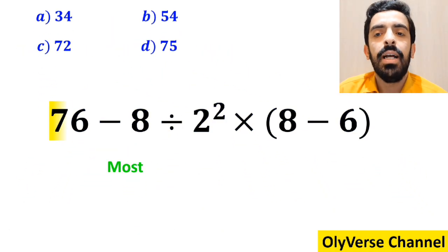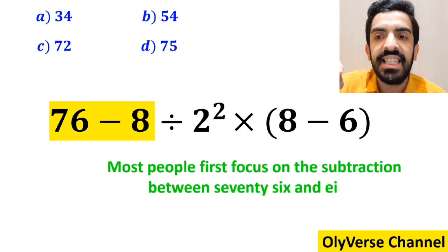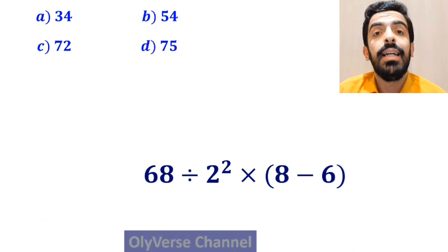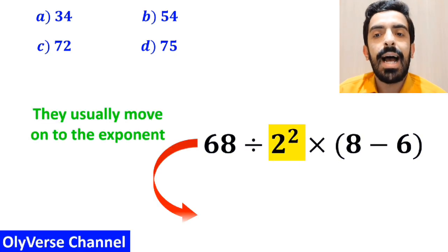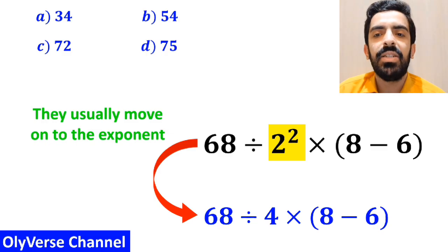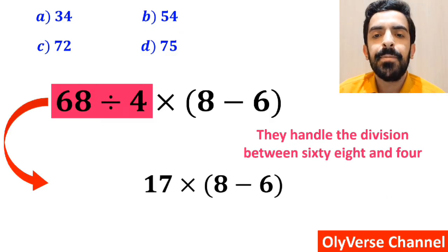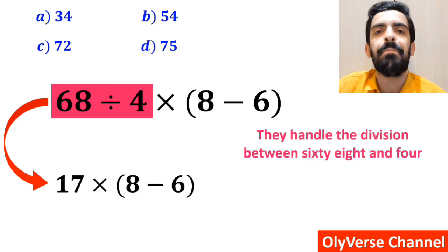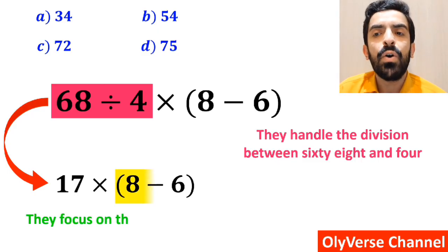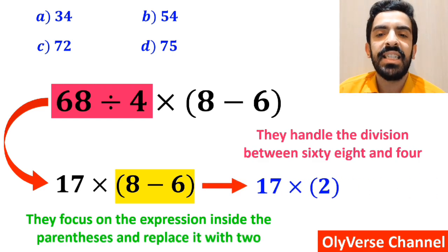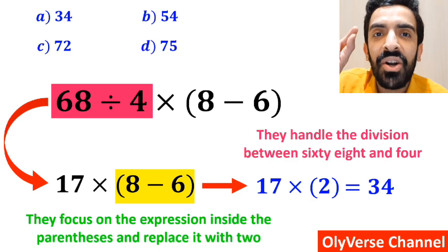To solve this question, most people first focus on the subtraction between 76 and 8 and rewrite the whole expression as 68 divided by 2 to the power of 2, multiplied by 8 minus 6 inside the parenthesis. In the next step, they move to the exponent and rewrite as 68 divided by 4, multiplied by 8 minus 6 inside the parenthesis. Then they handle the division between 68 and 4, replacing the expression with 17 multiplied by 8 minus 6 inside the parenthesis. In the final step, they focus on the expression inside the parenthesis and replace it with 2, so this expression becomes 17 multiplied by 2, which gives them the answer 34.